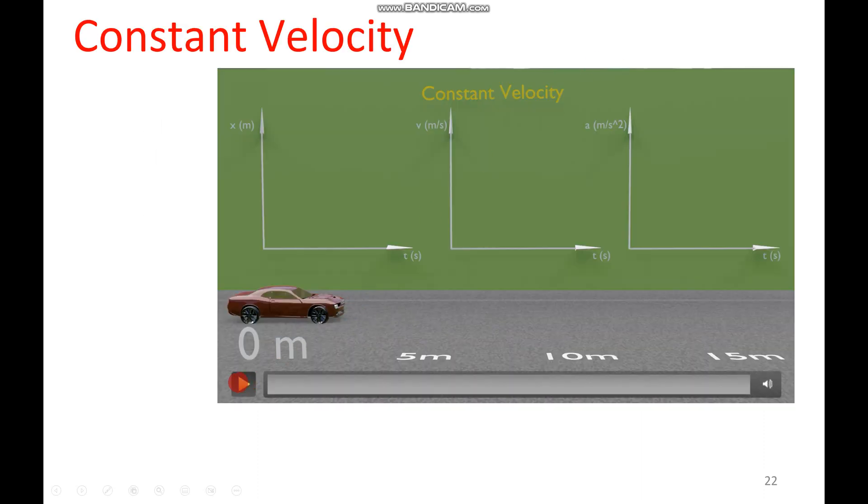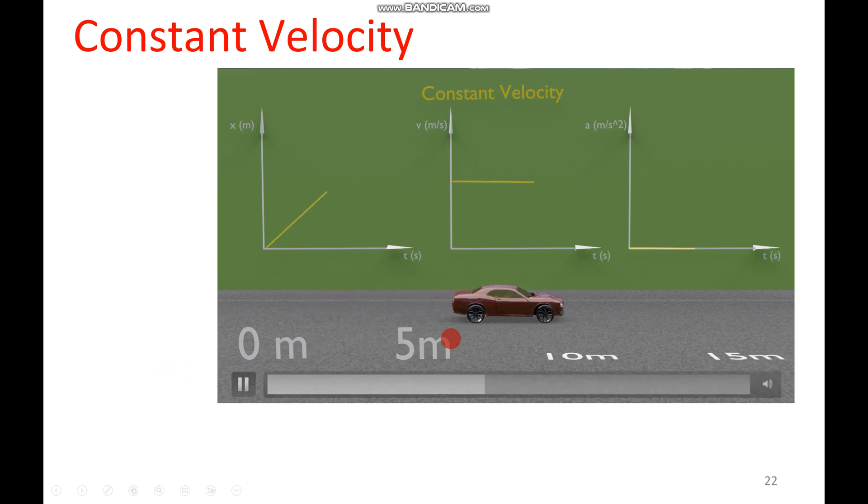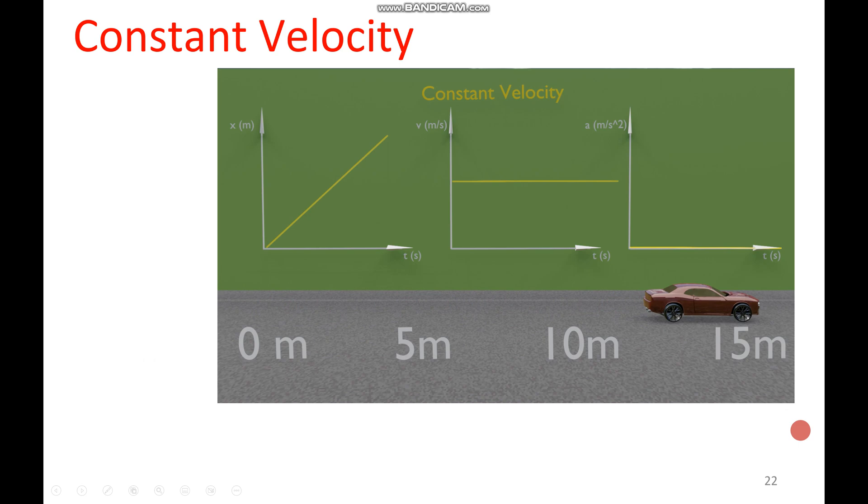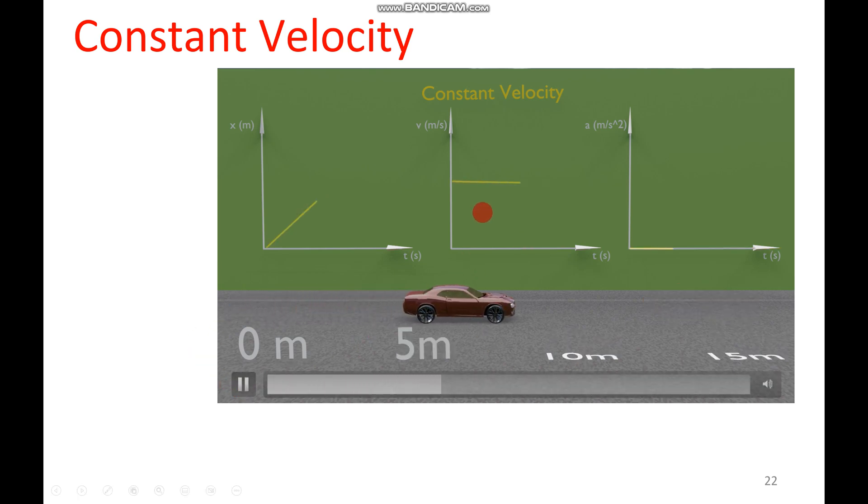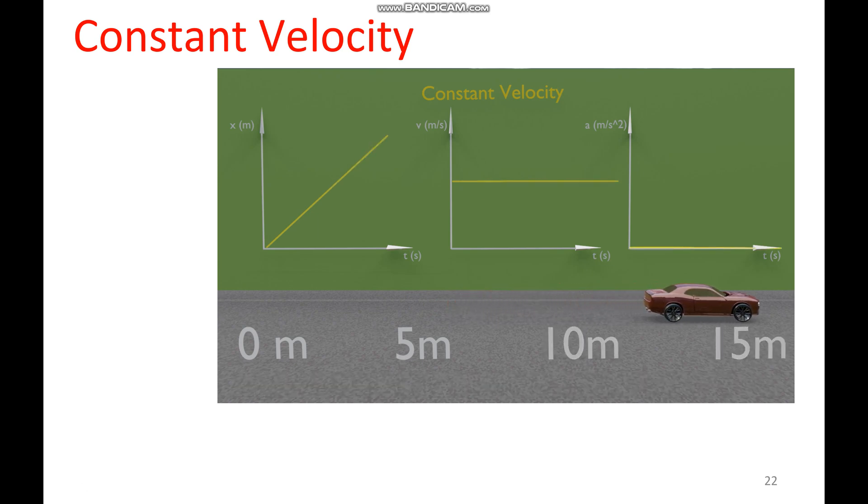For constant velocity, we have this animation to help out. The car is driving along the x-axis at a constant speed. For each second of motion, the car moves the same distance, so the position time graph has a straight but diagonal line. The slope of this line is our velocity, and we can see in this graph and in the animation, respectively, that neither the slope nor the velocity are changing. Thus, our velocity time graph has a horizontal line. Notice that it still has a non-zero y value. We take the slope of this, and we'll get zero. So once again, our acceleration is going to be a horizontal line at our t equals zero.